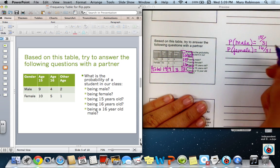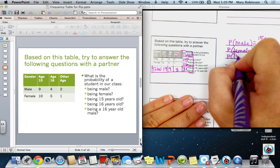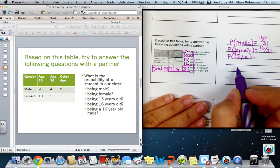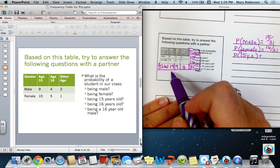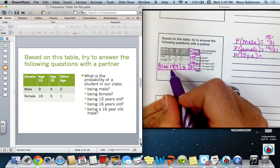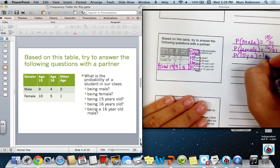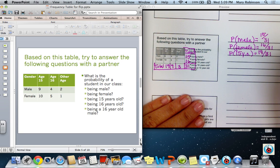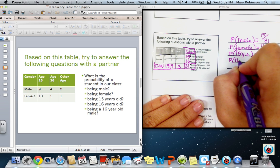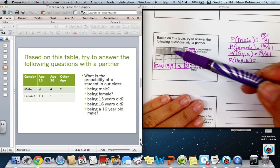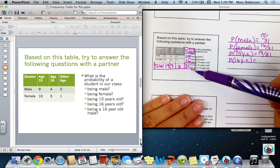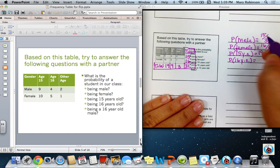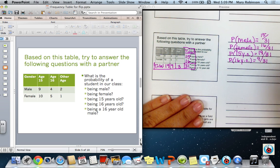Next, to find the probability that a student is 15 years old, we want to look at the column here in age 15. So how many students are 15? There are a total male and female of 19, out of the total number of students, 31. The probability of a student being 16 years old would be found by taking the total number of students that are 16, and now I hope you're seeing how important adding in this total column and row are, even if you're not given that. The total number of 16 year olds is 9 out of 31 students.